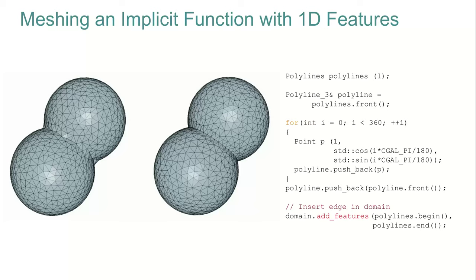Here is an example of meshing an implicit function with 1D features to preserve. The feature is achieved by sampling the circle intersection between the two spheres in the function, and then adding the feature into the domain.